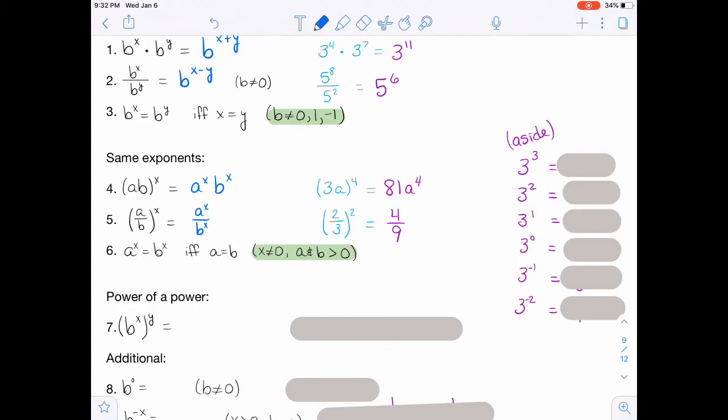For number seven, the power of a power, here you multiply. So this would become b to the x times y. So numerically, we've got 2 to the third squared. So you could do that in pieces. You could do 2 to the third, which is 8, and then square it and get 64. Or you could do 2 to the sixth, which is also 64.